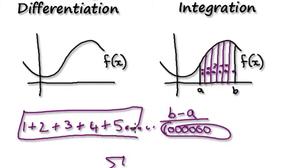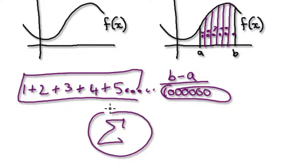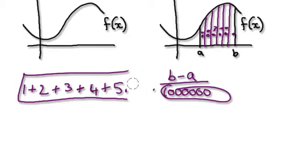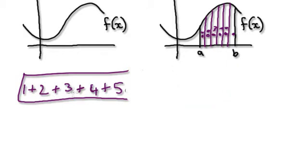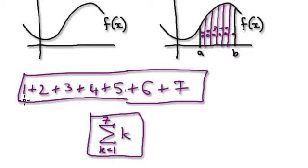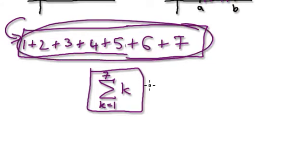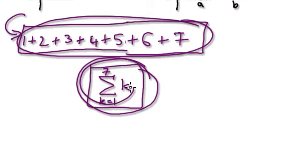That notation is Sigma notation. In order to understand integration, we need to understand this notation. For example, if we want to add up 1 + 2 + 3 + 4 + 5 + 6 + 7, we would use Sigma notation: the sum of K from K = 1 to 7. It's much easier to write than listing everything out.